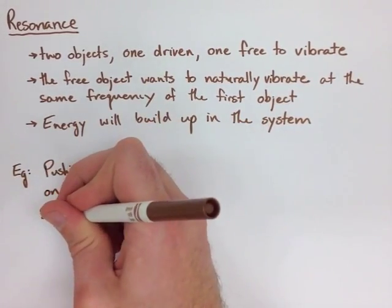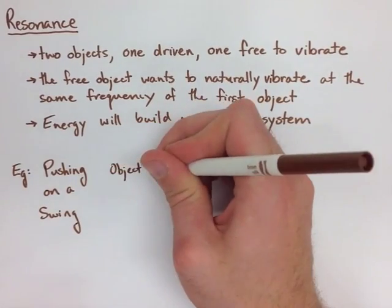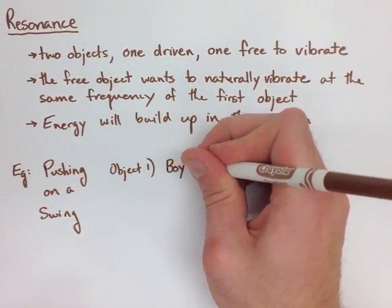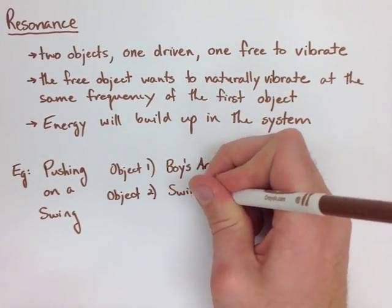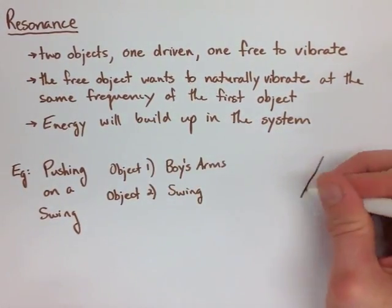You have two objects. You've got a little boy who's going to be pushing the swing. We're going to talk about the boy's arms. And then the second object would be the swing. We'll go ahead and draw this.